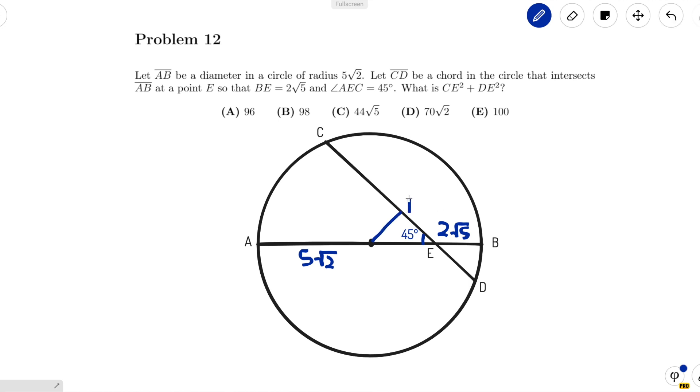One, it forms a 45-45-90 right triangle, OEF, and two, it divides CD into two equal parts, so CF is equal to FD.